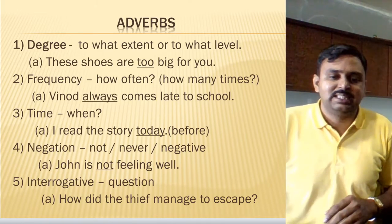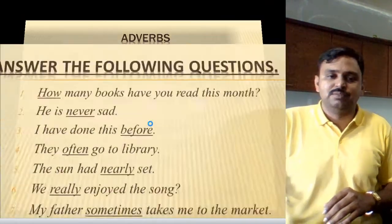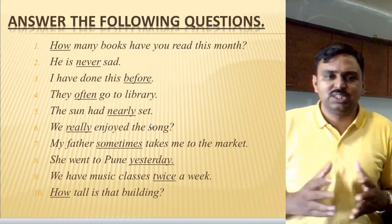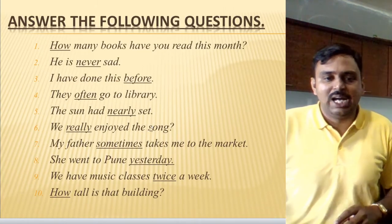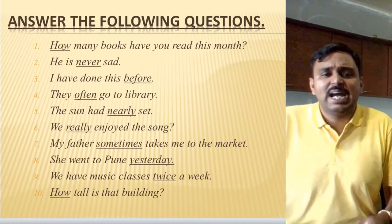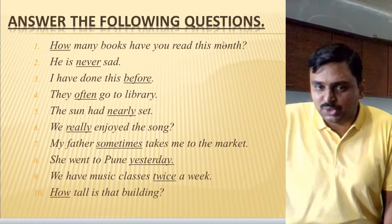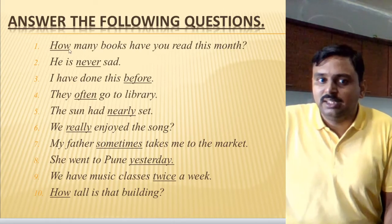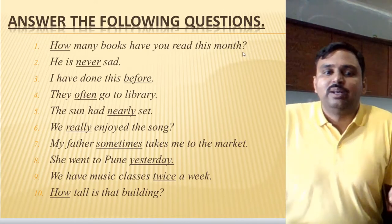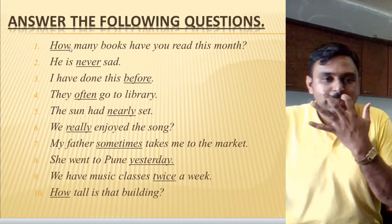Now let's look at examples. First question: 'How many books have you read this month?' I have already underlined the adverb here. It is a question, so can you guess which type of adverb it is? Correct — it is an interrogative adverb, because whenever there is a question, it is interrogative. So 'how' is the adverb, and it is an interrogative adverb.